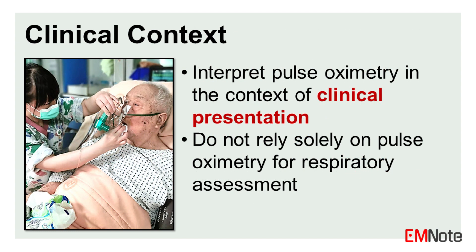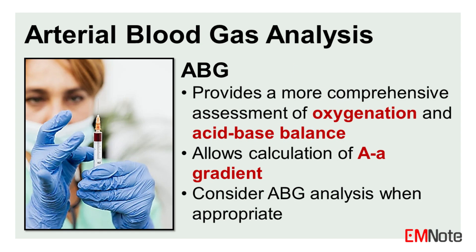When assessing patients with dyspnea or respiratory distress, it is crucial to interpret pulse oximetry readings in the context of the patient's clinical presentation, physical examination findings, and other diagnostic modalities. Relying solely on pulse oximetry can potentially lead to misdiagnoses or inappropriate management decisions. Arterial blood gas (ABG) analysis provides a more comprehensive assessment of oxygenation and acid-base balance, and allows calculation of the A-a gradient, which helps clinicians narrow down the differential diagnosis for hypoxemia. One should consider ABG analysis when appropriate.